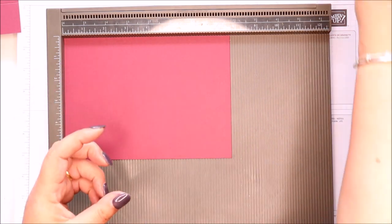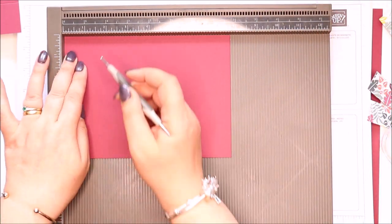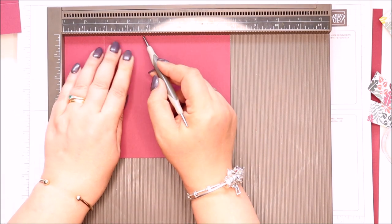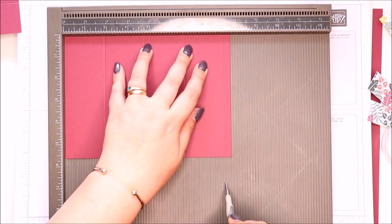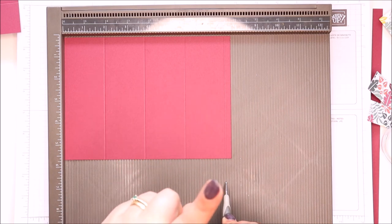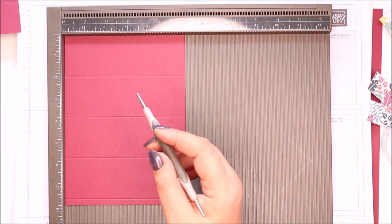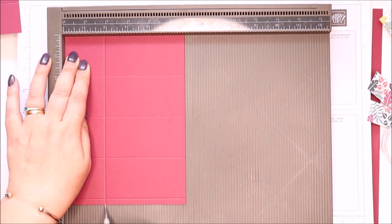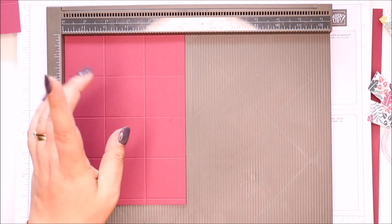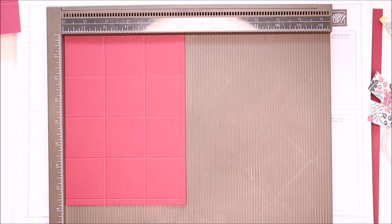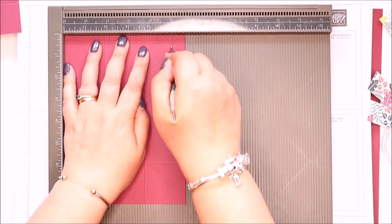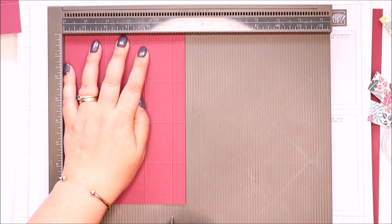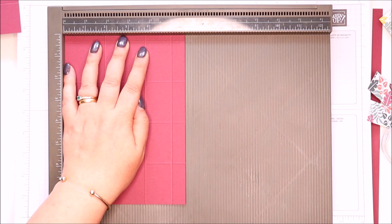The carton, the milk carton itself, scoring that at 1 and 7/8 of an inch, 3 and 3/4, 5 and 5/8, and 7 and 1/2 inches, which in metric is 4.5, 9, 13.5, and 18. And then on the short side at 1 and 7/8, 3 and 3/4, which is 4.5 and 9 in metric. And then you turn it over and score it at 5, which is 12.5 centimeters. So you're turning it over, not round.